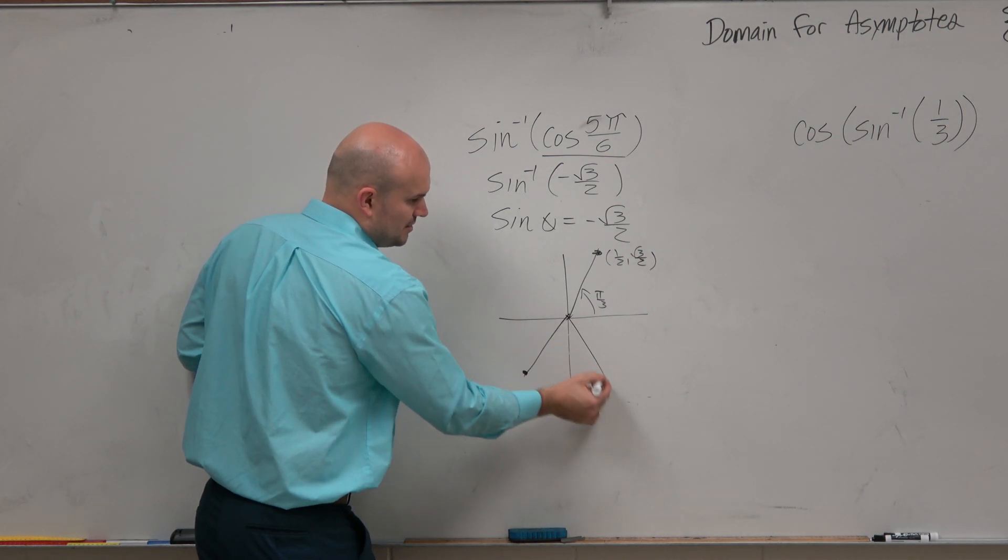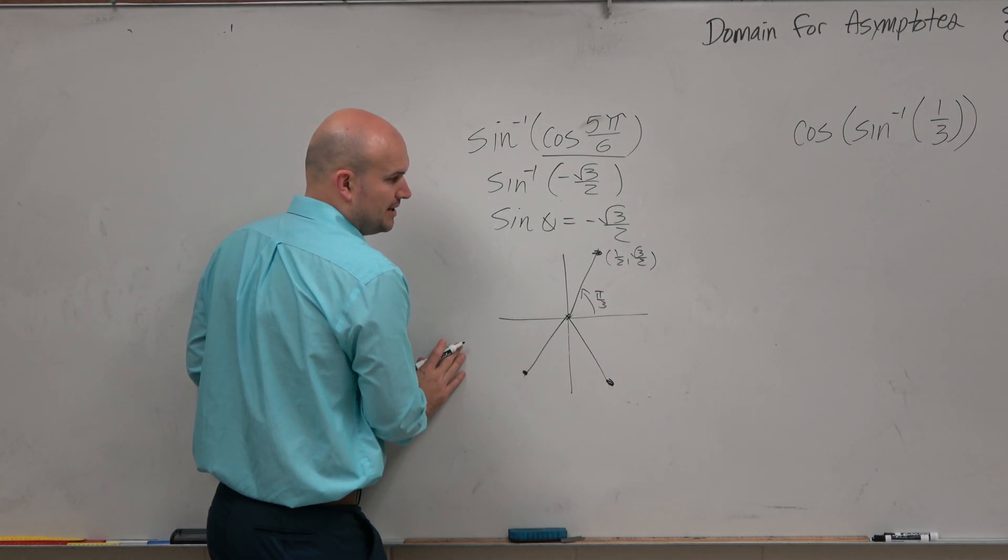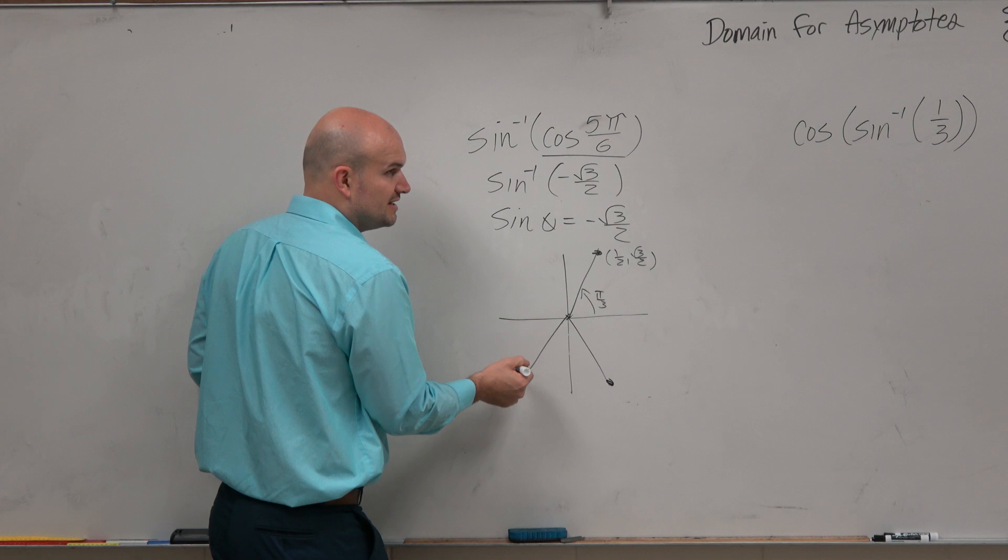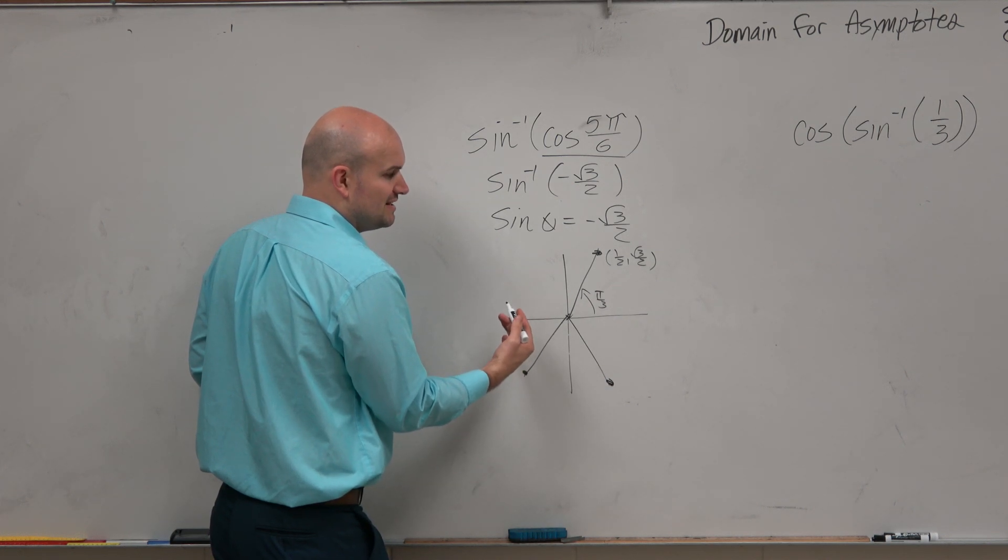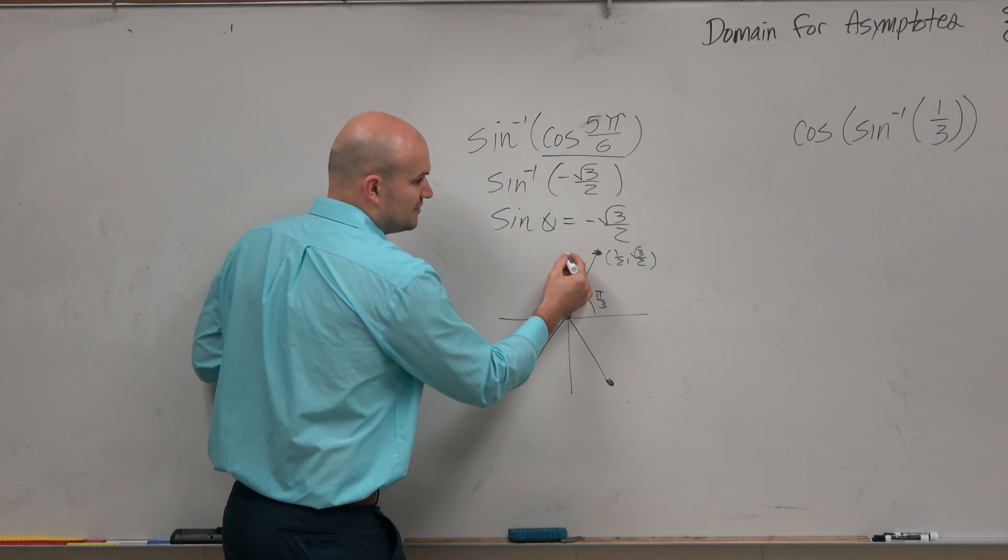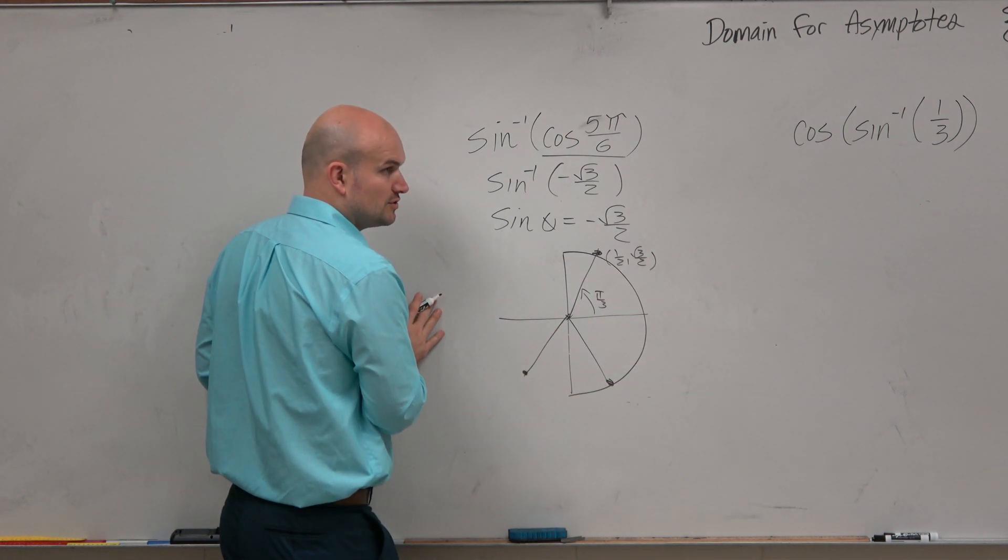That means we need to find the angle down here, or the angle down here, right? But the problem is, obviously, we just can't find any angle. We have to find the angle that falls within the constraint of sine for sine inverse, which is in the first and the fourth quadrants.